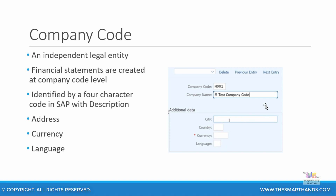Later, once you are about to save, you can give more details about that company code including the street address and language. You then create your company code and proceed to assign it with certain transactions and configurations, which we will look at in later presentations.